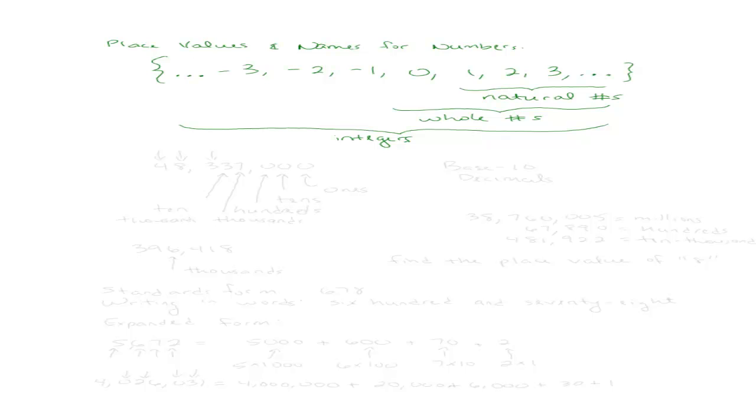Okay, so one of the things we want to talk about when we have a whole number, say like the number 48,337,000. Each one of the digits in this number has a place value. Each one of the digits has a name for its place value.